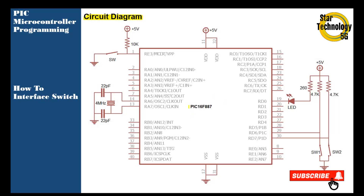Here is the circuit diagram we will use in our project. This is the PIC16F877. Pin numbers 14 and 13 are interfaced with the 4 MHz crystal and we are using 22 pF capacitors. The RD0 pin is interfaced with the LED in current sinking mode, with a 260 ohm resistor. The RD6 and RD7 pins are interfaced with the switches using 4.7 kilohm pull-up resistors, with the other side of each switch grounded. Now we will draw the circuit in Proteus and test it.